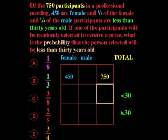And then half of the female participants are less than 30, so that's 225, and that means the other half equal to or greater than 30, and that's 225.